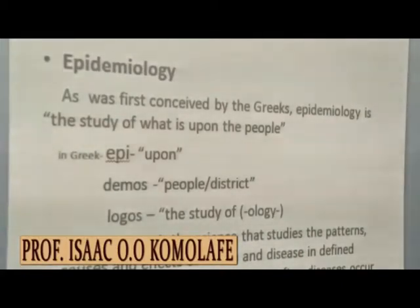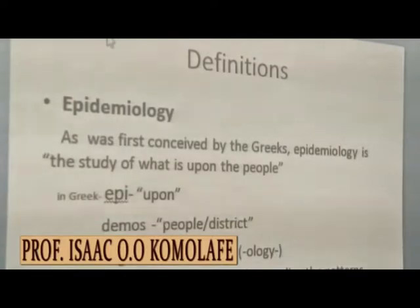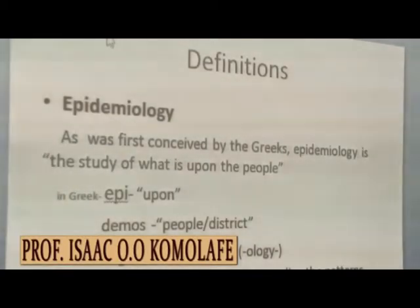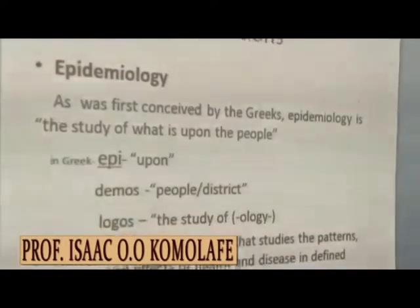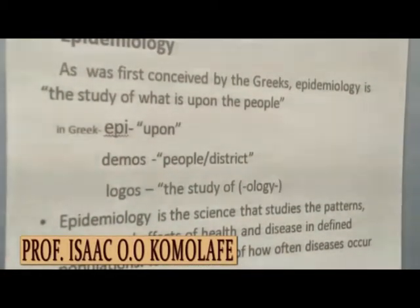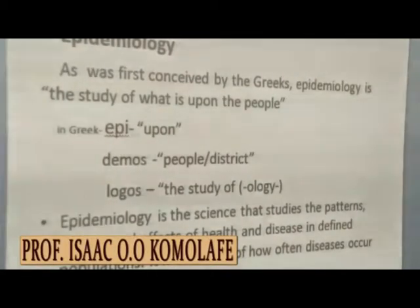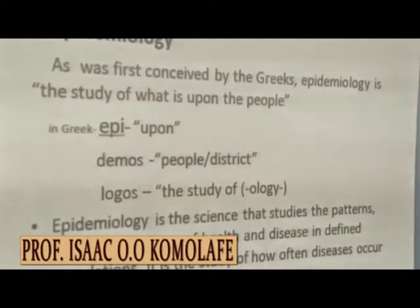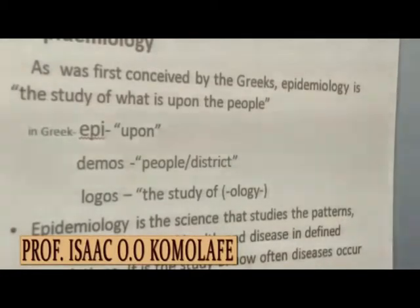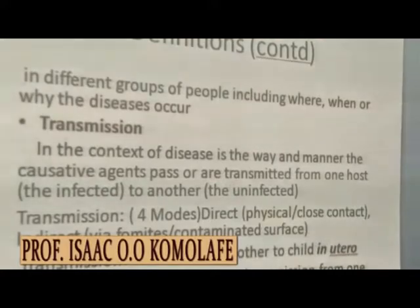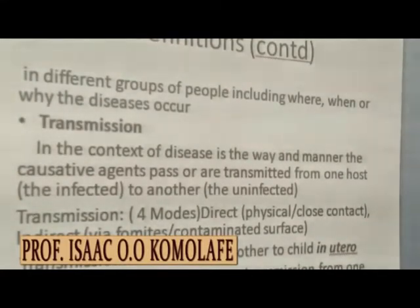Let me add some definitions. Epidemiology — as first conceived by the Greeks — is the study of what is upon the people. In Greek, epi means upon, demos means people or district, and logos means the study of. Epidemiology, therefore, is a science that studies the patterns, causes, and effects of health and disease in defined populations. It is the study of how often diseases occur in different groups of people, including where they occur, when they occur, and why the diseases occur.